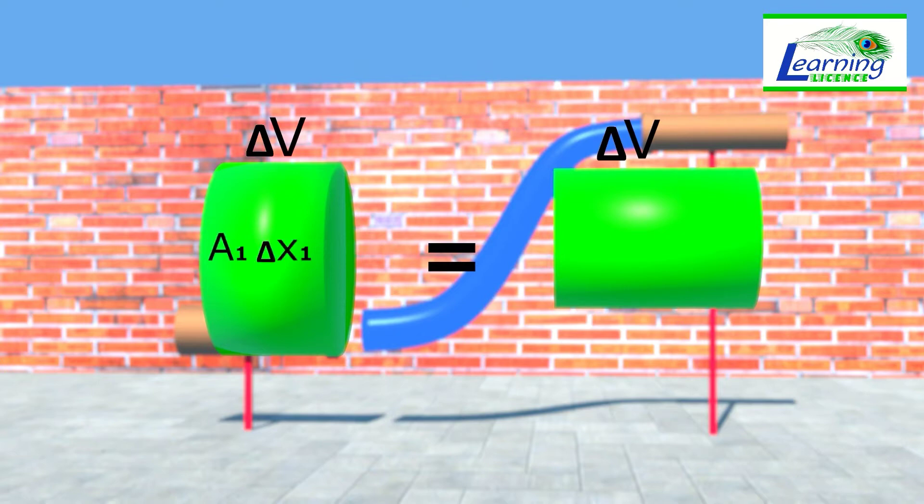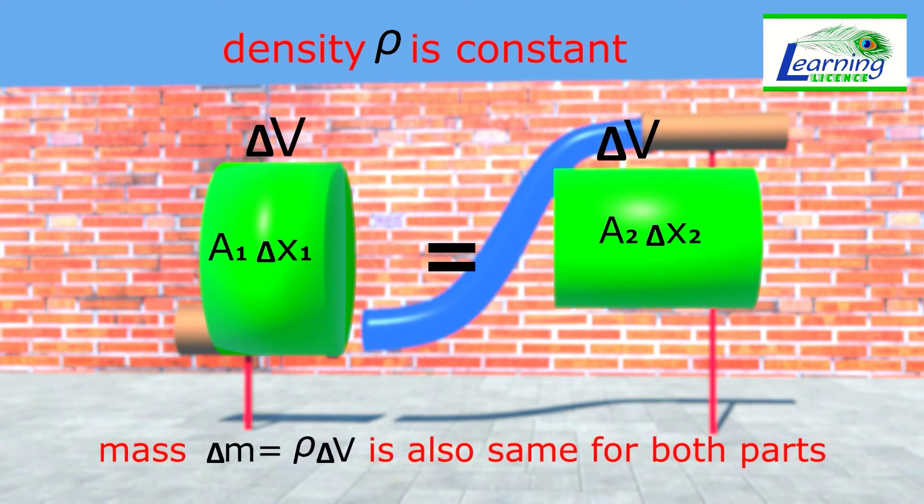Volume of first section A1 del X1 must be equal to the volume of second section A2 del X2. As the density rho of fluid is constant, the mass del M equals rho dot del V is also same for both sections.